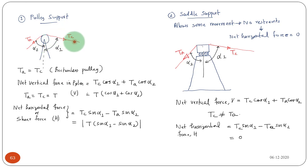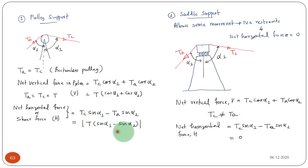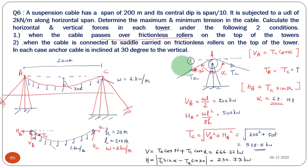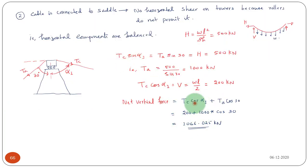For the pulley support, a horizontal force will be present. Because of the tensile force in the cable and anchor cable, we can have a net horizontal force and a net vertical force. We have to design the vertical tower and its foundation for this vertical force and the moment caused by the horizontal force. When you come to a saddle support, there will be no net horizontal force — the horizontal components are equal and opposite — but there will be a net vertical force.